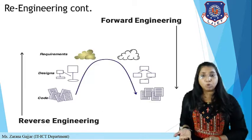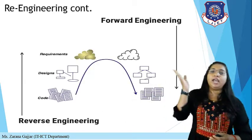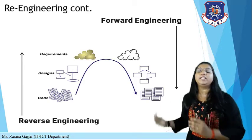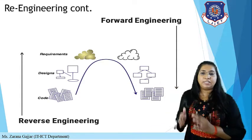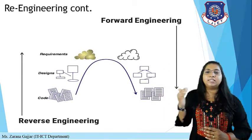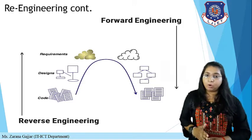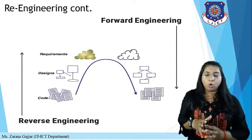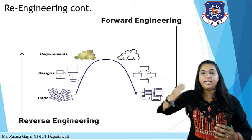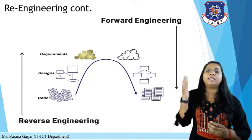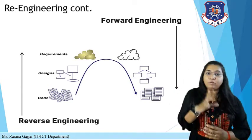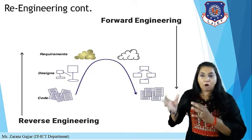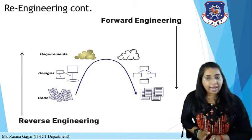Let's discuss the re-engineering process. There is reverse engineering and forward engineering. If you have an existing system and you are analyzing it, that is reverse engineering. In SDLC, phases are: requirement specification, analysis, design, coding, implementation, and maintenance. But in reverse engineering, you track from the back — first checking the actual code, then moving to implementation, then design, then specification. Reverse engineering is a reverse process of SDLC. Then in forward engineering, you take the output of reverse engineering and add new features — the output of reverse engineering becomes the input for forward engineering.